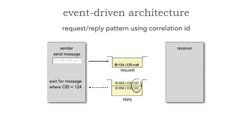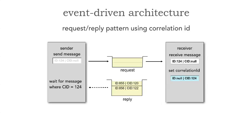Notice there are still a couple of messages waiting to be retrieved — those correlation IDs are 120 and 122, so they're not mine; they'll sit on the queue until their owners are ready to retrieve them. Now the receiver receives my message on ID 124, does a lookup of the name, then sets that correlation ID equal to my original message ID — number 124 — and sends the response. That response gets a new unique message ID, in this case 857, but the correlation ID is my original message ID.